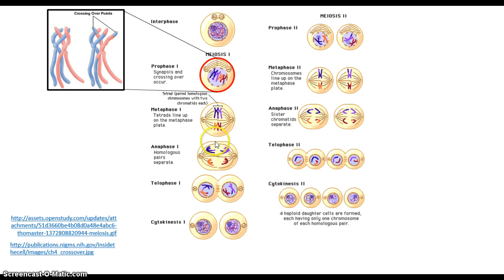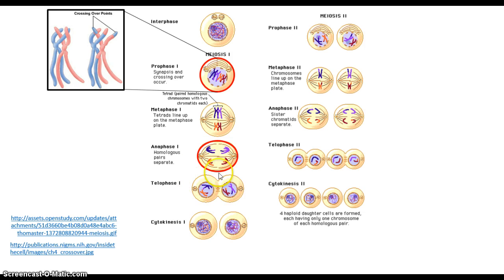Then the chromosomes are lined up at metaphase, in this case paired up with each other, and separated in anaphase I. Then in telophase, the new nuclei form, the spindle fibers disappear, and the cell begins to separate — an event completed in cytokinesis I.